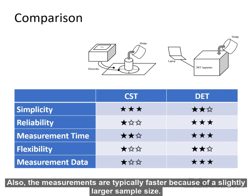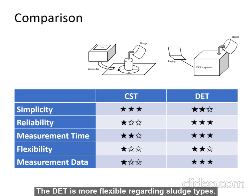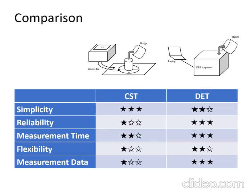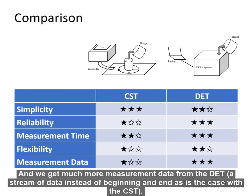The measurements are typically faster because of a slightly larger sample size. The DET is also more flexible regarding sludge types. And we get much more measurement data from the DET — there is, so to speak, a stream of data instead of just a beginning and end, as is the case with the CST.